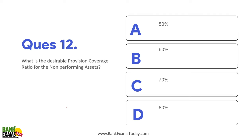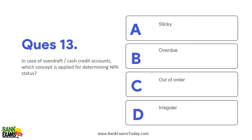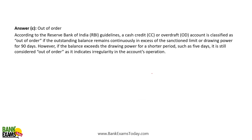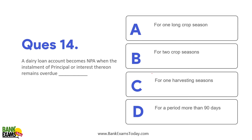What is the desirable Provision Coverage Ratio (PCR) for NPAs? It is 70% — the desirable provision coverage ratio for NPAs is 70%. In case of overdraft and cash credit accounts, the 'out of order' concept is applied for determining NPA status.